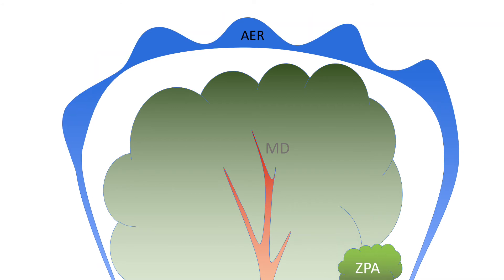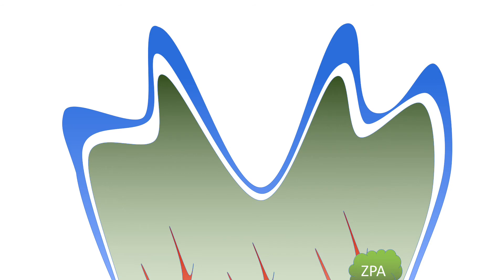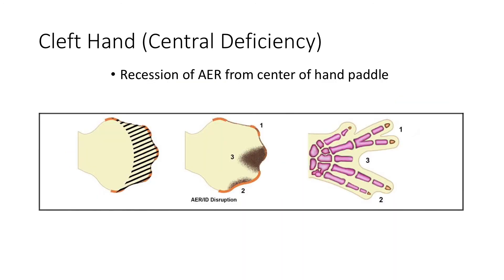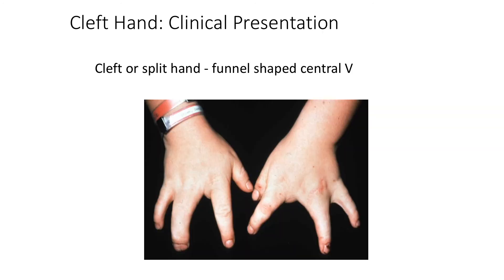What else? Instead of the usual four cleavage sites, if you have an extended cleavage site in the center, that extended cleavage site leads to an extended web space in the center and apoptosis of what would have been a finger — so you get a cleft hand. The recession of the AER from the center of the hand paddle leads to loss of mesodermal elements within the center, resulting in a cleft or split hand, which has a funnel-shaped central V — unlike cymbarachidactyly, which has a U shape.